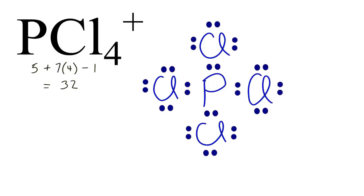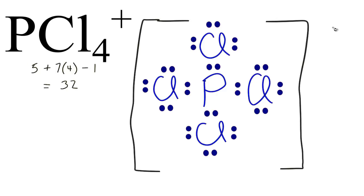There's one last thing that we do need to do, and that's put brackets around the entire Lewis structure, and put a plus sign to show that this is the PCl4 plus ion.